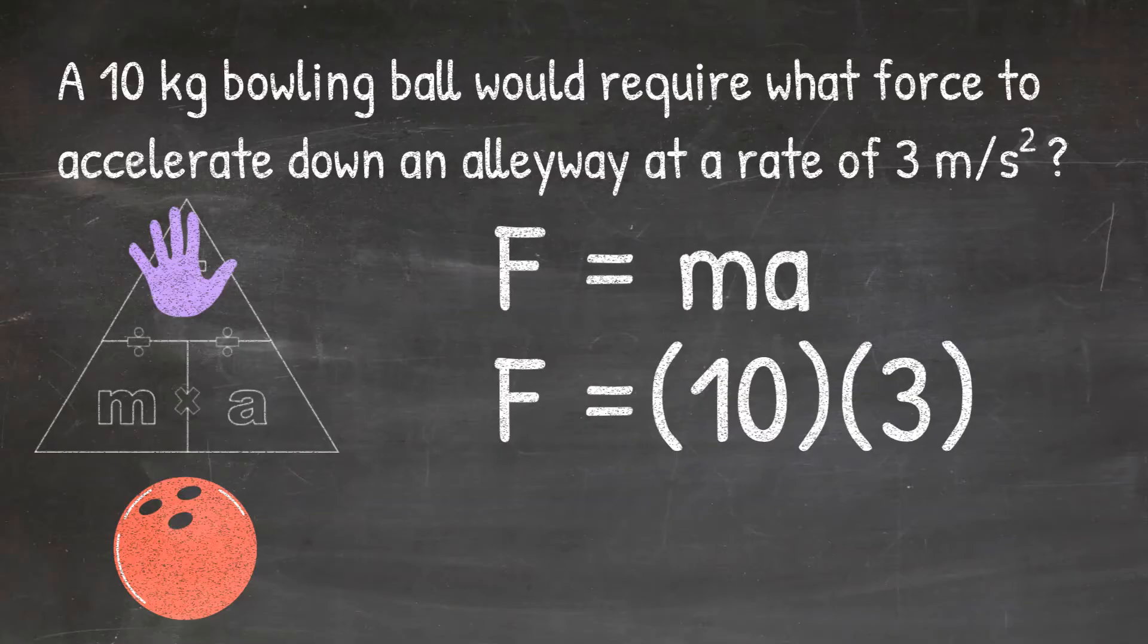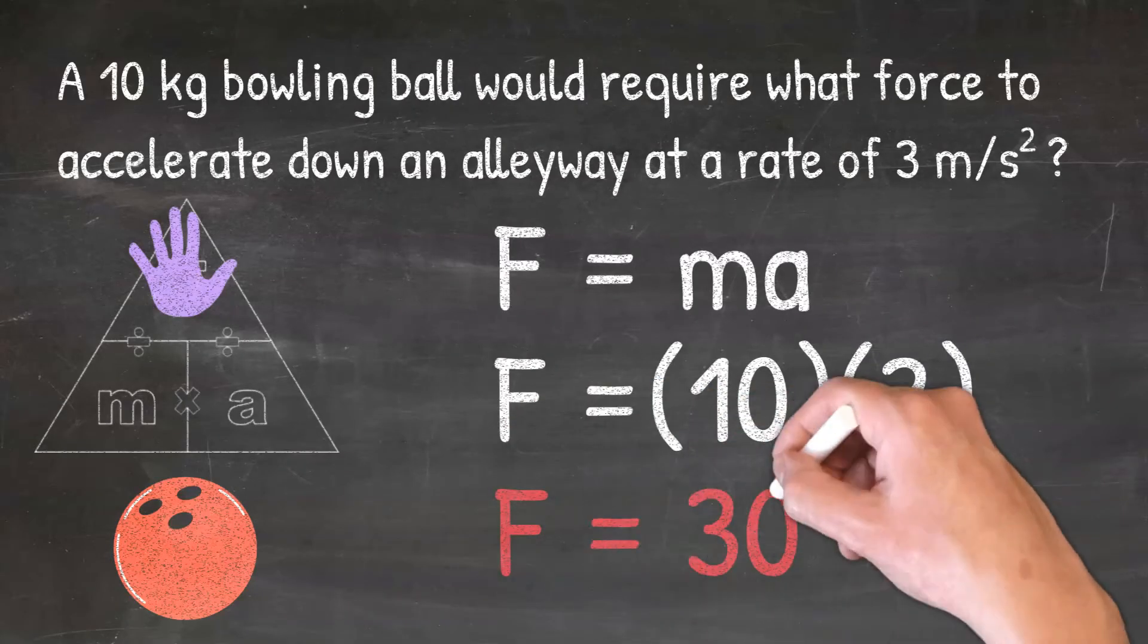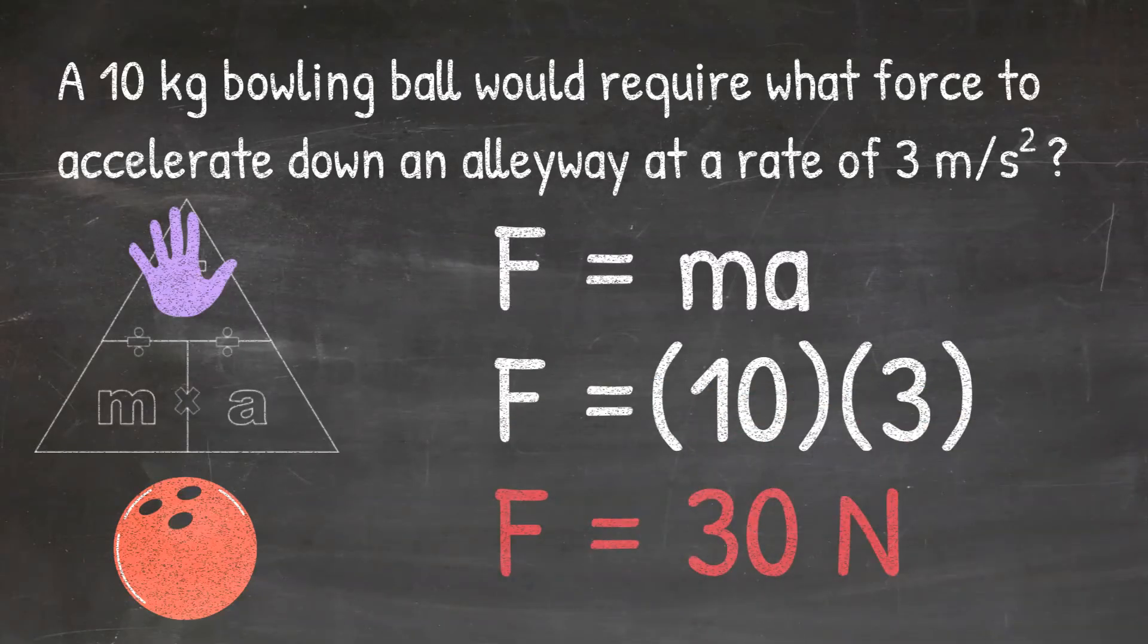I can do 10 times 3 to get a final answer of 30 newtons. This means that if a 10 kilogram bowling ball needs to accelerate down the alleyway at a rate of 3 meters per second, a force of 30 newtons must be applied to it.